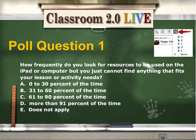Just like we usually do in the show, the first thing we're going to start off with are some poll questions. It helps me get a little bit of background to know what everyone's experience is. The first poll question: how frequently do you look for resources to be used on the iPad or computer, but you just can't find anything that fits your lesson or activity needed just right? Go ahead and place your vote. A is 0 to 30%, B is 31 to 60%, C is 61 to 90%, D is more than 91%, or E if it doesn't apply to you.